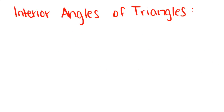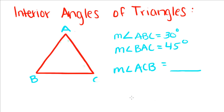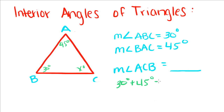Using this information, we're going to do an example. We know that the measure of angle ABC is equal to 30 degrees, and the measure of angle BAC is equal to 45 degrees, and the measure of angle ACB is what we're trying to find. So we're just going to call it x.